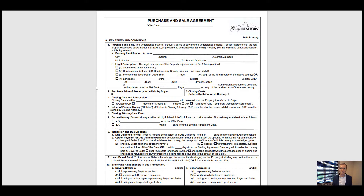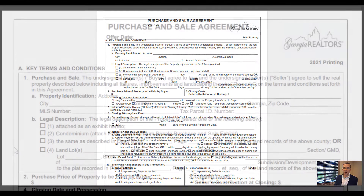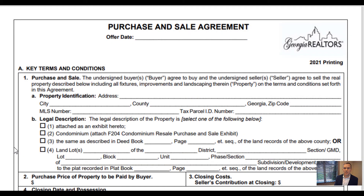All the software that we use, whatever software it is that you're using, it should be pretty easy to populate buyers' names and sellers' names and things like that. How do I make it even faster for you? Where do some people get tripped up, and how can we speed that process up so that you're not wasting your Sunday morning? So if we look at the screen here, I've pulled up F-201, which is our purchase and sale agreement for resale properties.